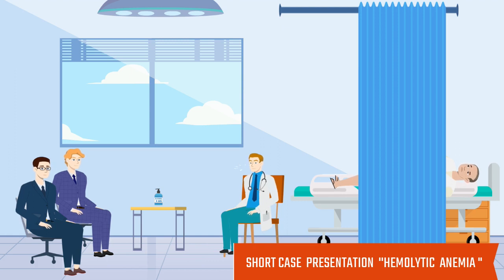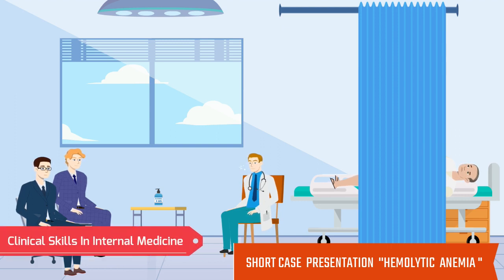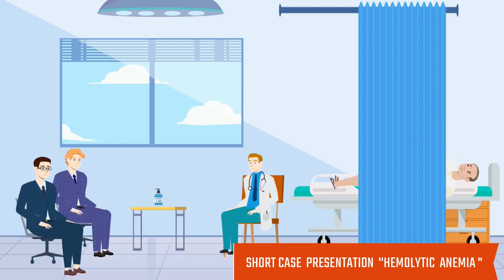Kidneys are not ballottable. Para-aortic and inguinal lymph nodes are not palpable. Shifting dullness is not present. On auscultation, bowel sounds are audible but there is no hepatic and renal bruit.